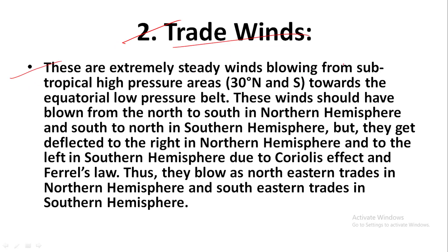Number two: trade winds. These are extremely steady winds going from subtropical high pressure areas towards the equatorial low pressure belt. These winds should have blown from north to south in the northern hemisphere and south to north in the southern hemisphere, but they get deflected to the right in the northern hemisphere and to the left in the southern hemisphere due to the Coriolis effect and Ferrel's law. Thus they blow as northeastern trades in the northern hemisphere and southeastern trades in the southern hemisphere.